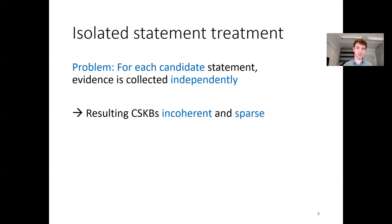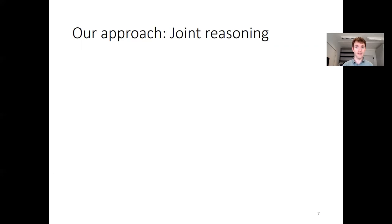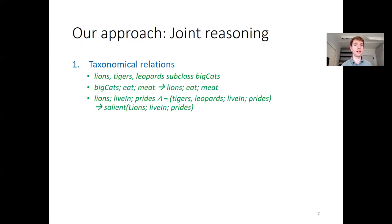Our approach is to perform joint reasoning over all statements. In particular, we exploit taxonomical relations. If lions are big cats and big cats eat meat, then it makes sense that lions also eat meat. Or if lions live in prides but their taxonomic siblings — tigers and leopards — don't, then it's presumably salient that lions do live in prides.